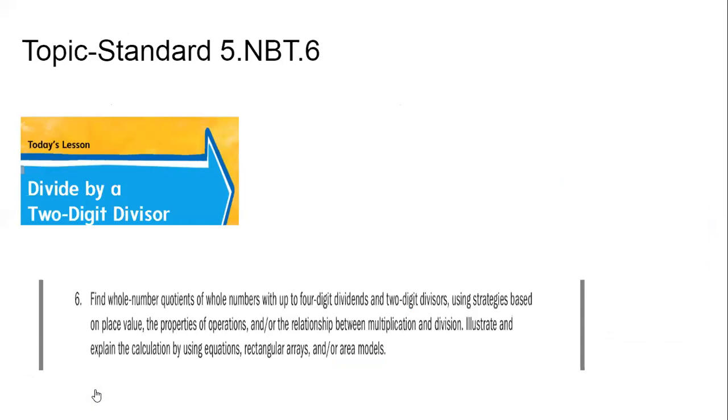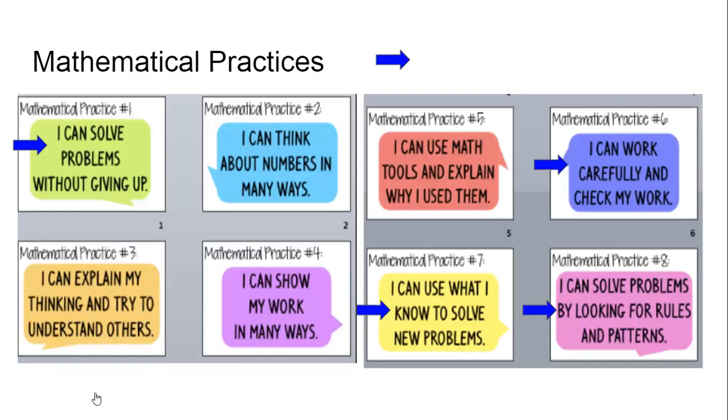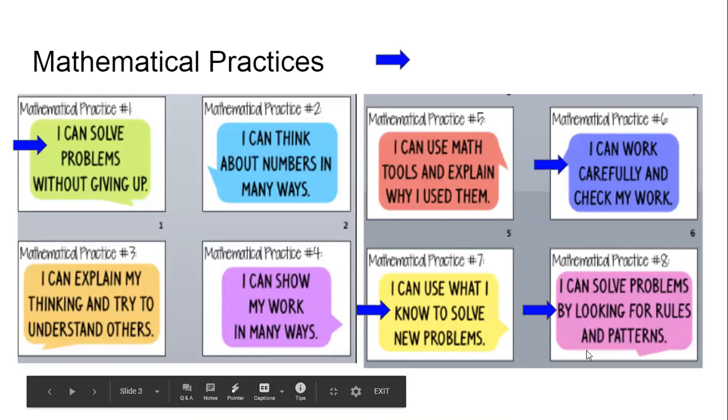We're trying to find whole number quotients with up to four-digit dividends and two-digit divisors. Our mathematical practices are marked with a blue arrow and today we're using mathematical practice number one, I can solve problems without giving up, number six, I can work carefully and check my work, number seven, I can use what I already know to solve new problems, and number eight, I can solve problems by looking for rules and patterns.